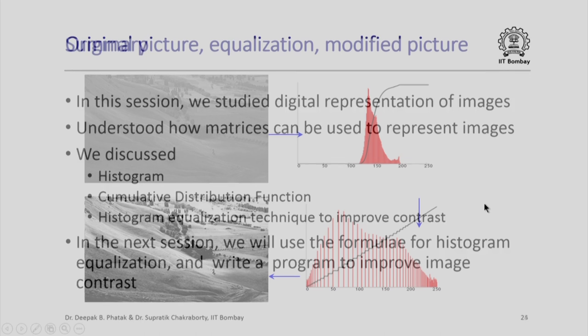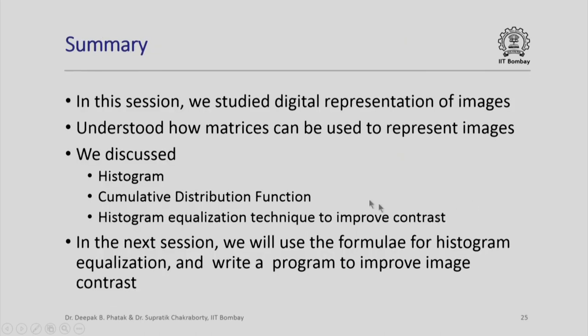In short, we have seen how histogram equalization can be done and how digital images can be represented. In the next session, we will actually write a program to implement this technique. I would like to tell you that this programming is not very complex at all. In fact, in many embedded systems such as digital cameras, such histogram equalization programs are written by people, embedded into the computers inside the camera, and can be invoked by the press of a button. In this course, we shall study how such programs can be written in C++ and executed.